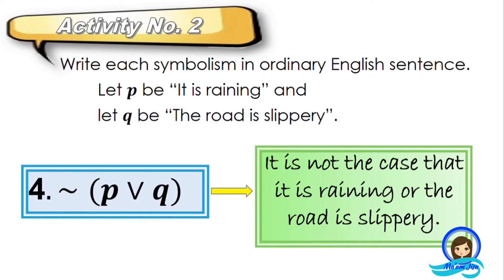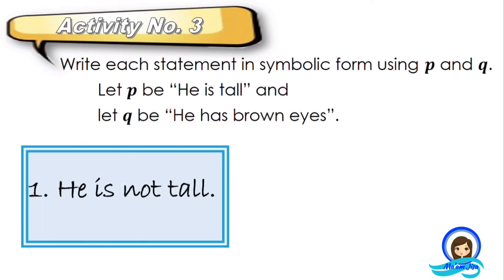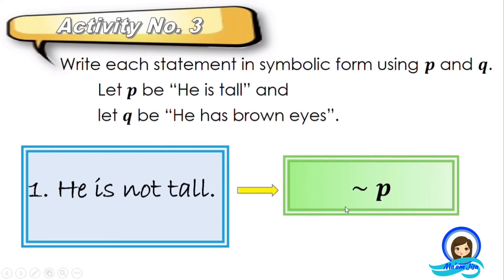It's just easy, right? I understand that at first it may be confusing, but I know you will be able to get it. Let's proceed to activity number three: write each statement in symbolic form using propositions P and Q. Let P be 'he is tall' and Q be 'he has brown eyes.' For the first given, 'he is not tall' — in symbols, this is not P, the negation of P.